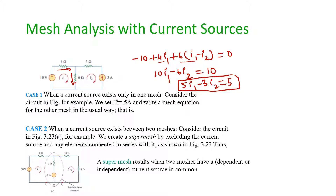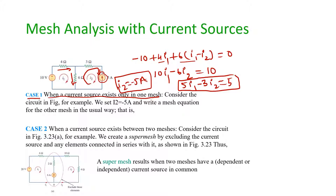When you apply KVL at mesh 2, there is a current source, so you cannot apply KVL directly. This is Case 1: when the current source exists only in one mesh. We simply set I2 equal to minus 5 amperes, because I2 is going opposite to the 5 ampere source.